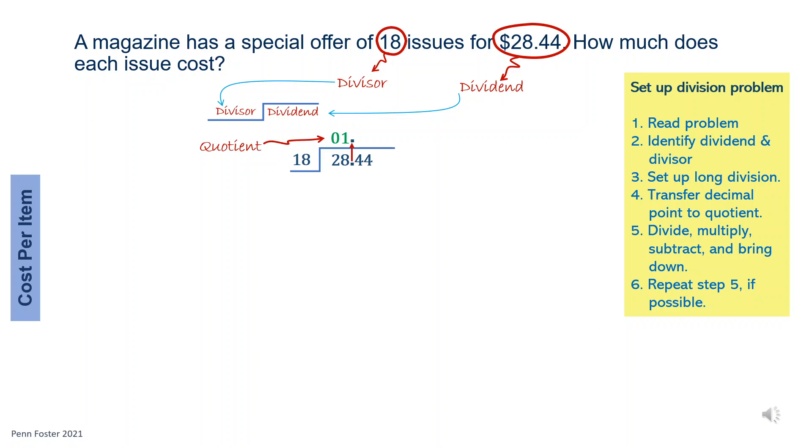Multiply, subtract, and bring down. Let's do that. Multiply 1 times 18. It's 18. Write it down and subtract 28 minus 18. It's 10. Finally, bring down the digit next in line from the dividend. 10 becomes 104.